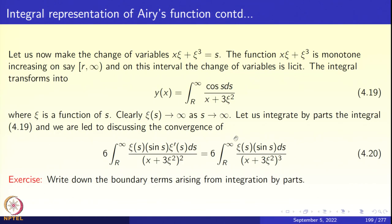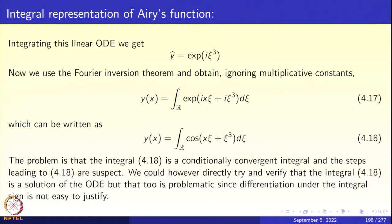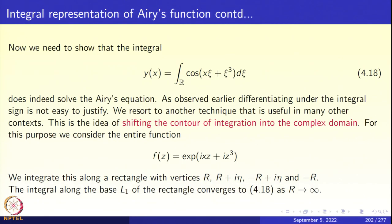We have completed the proof that integral 4.18 is conditionally convergent. That is not sufficient; we need to transform it into an absolutely convergent integral. This means shifting the contour of integration into the complex domain — a very frequently used idea in the theory of differential equations.